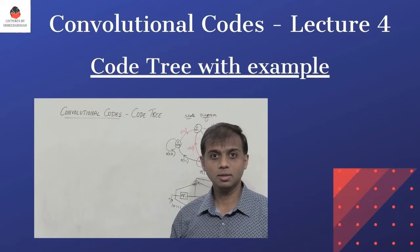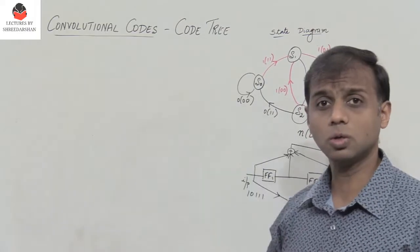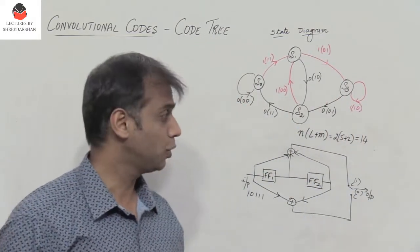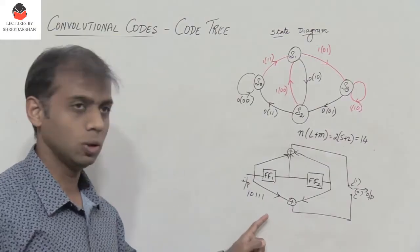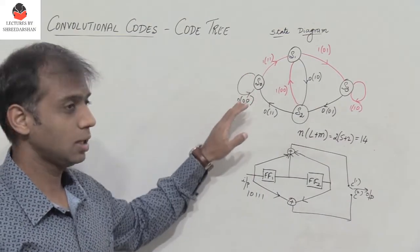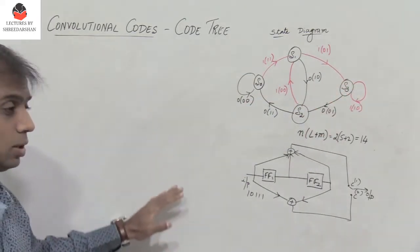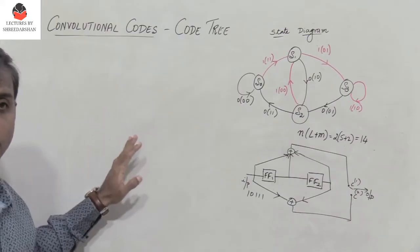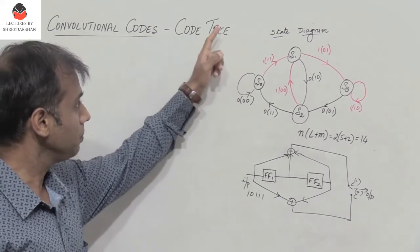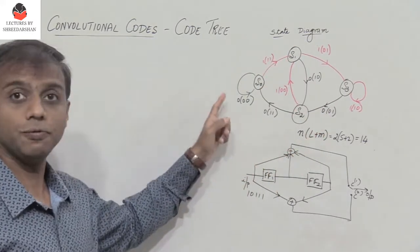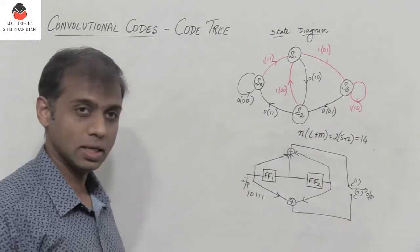Hello and welcome to the fourth lecture on convolutional codes. In this lecture, we shall see how to draw the code tree and find the output for a given input. In the previous video lecture, we had considered a convolutional encoder and drew the state diagram and the state transition table. Given the state diagram, we can write the code tree and find the output — and the answer is yes. We shall draw the code tree from the state diagram and find the output for the given input 10111.